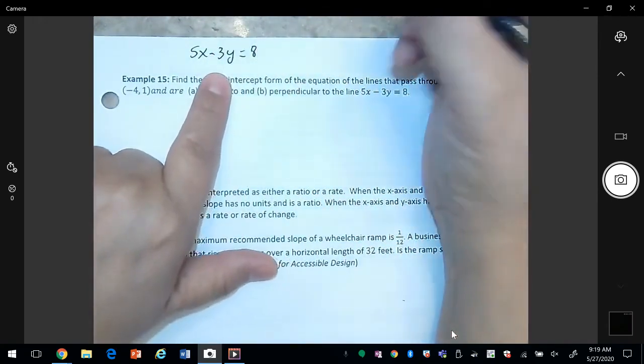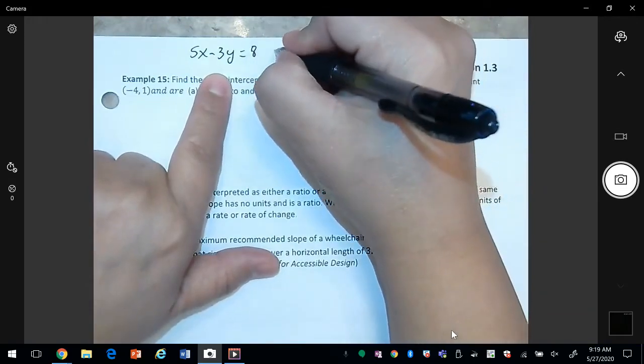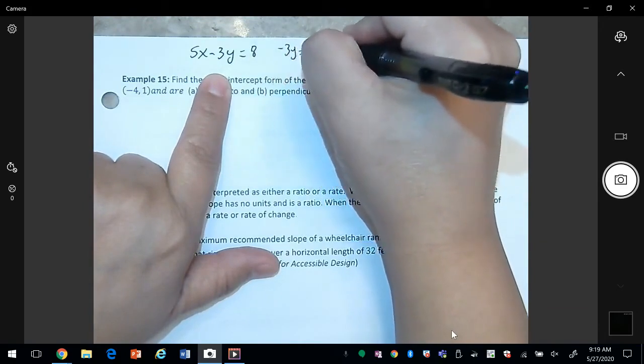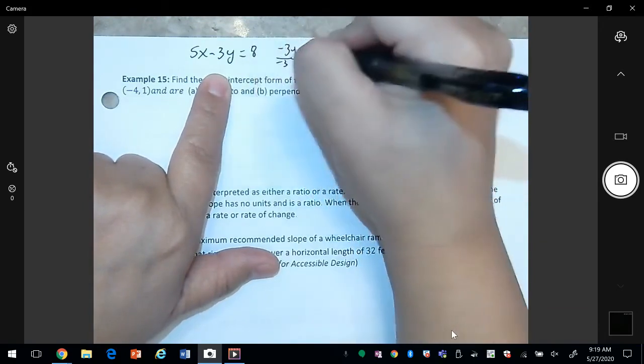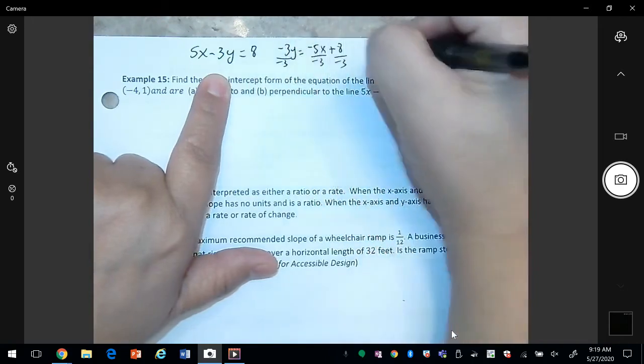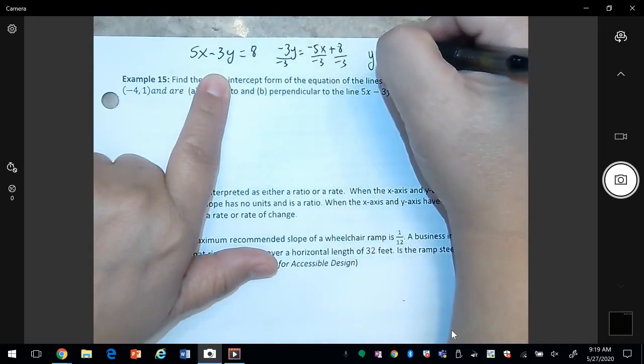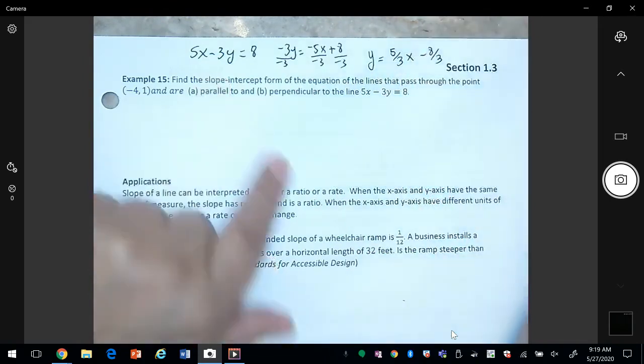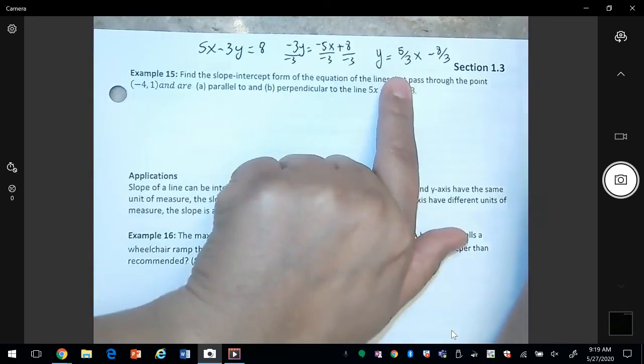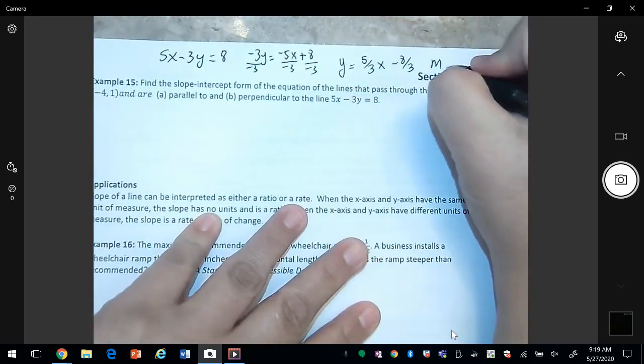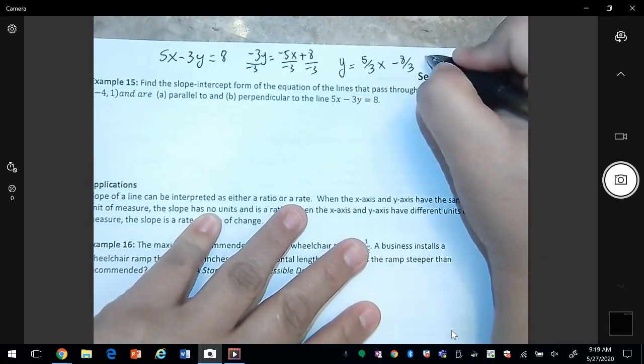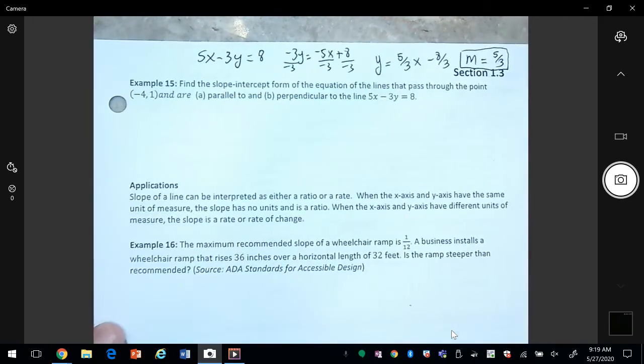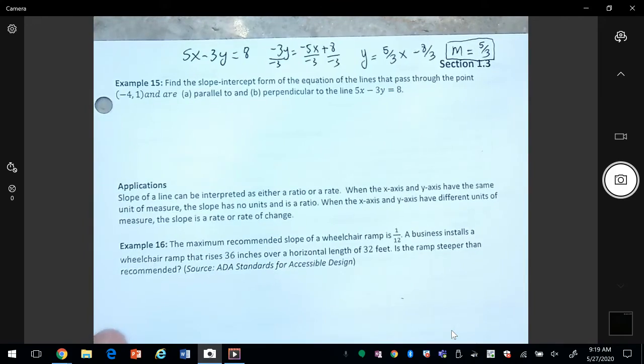So if I have this line here, 5x minus 3y equals 8, I need to find the slope, so I'm going to solve for y. So I'm going to subtract 5x on both sides and divide by negative three. So y is equal to five thirds x minus eight thirds. So all we want from this line is going to be the slope, which is five thirds.